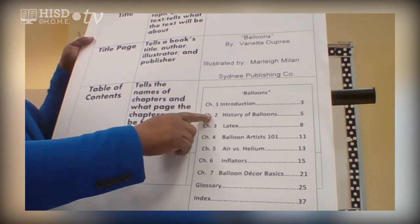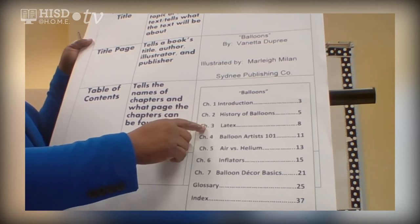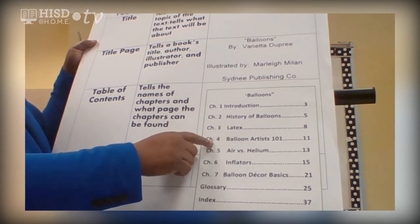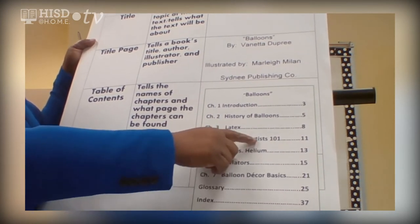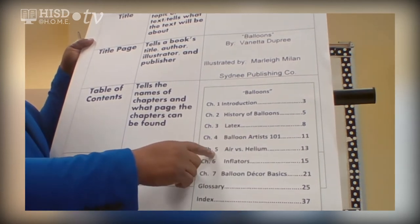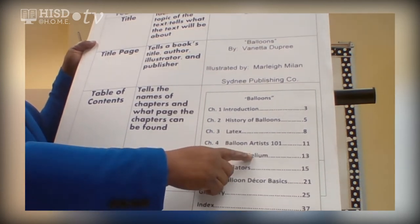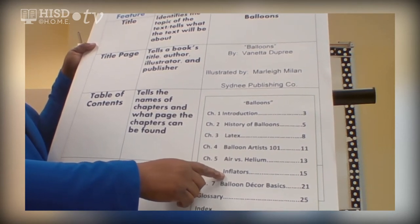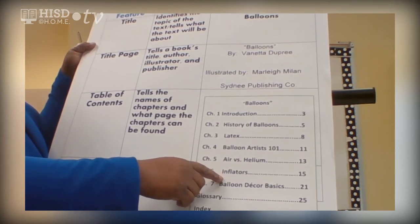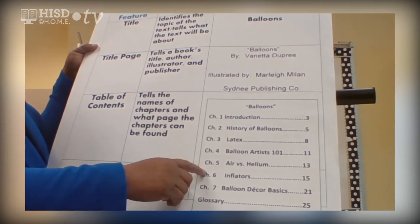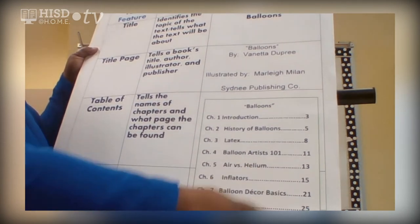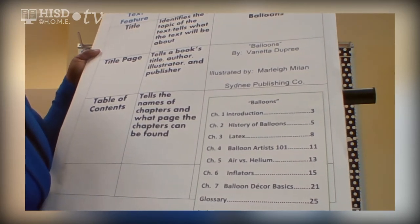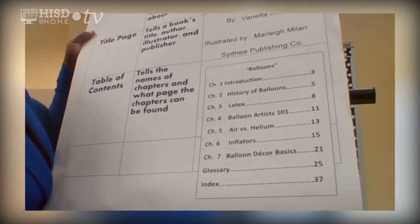Chapter one: introduction. Chapter two: history of balloons. Chapter three: latex. Chapter four: balloon artists 101. Chapter five: air versus helium. Chapter six: inflators. Bingo! So I can flip through the book and turn to page 15, where Chapter six gives me information about inflators.